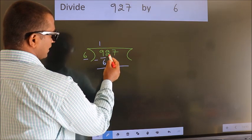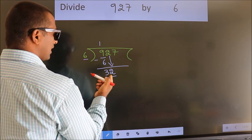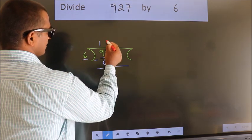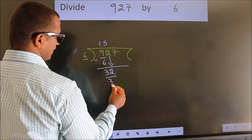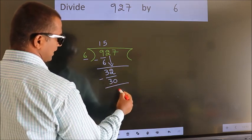After this, bring down the beside number. So, 2 down. So, 32. A number close to 32 in the 6 table is 6 fives 30. Now we subtract. We get 2.